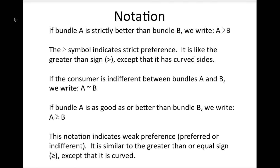Now that we have established basic conditions for consumer preferences, we can develop a graphical model to represent different types of preferences. These models are called indifference curves. An indifference curve represents a set of consumption bundles between which the consumer is indifferent. The set of all consumption bundles that are as good as or better than the bundles on the indifference curve is called the weakly preferred set. For goods that are good, these bundles will be to the northeast of the indifference curve. Ask yourself whether this set is a convex set.